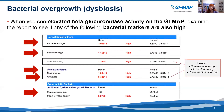When you see elevated beta-glucuronidase activity on the GI MAP test, examine the report to see if any of the following bacterial markers are also high: Bacteroides fragilis, Escherichia species, Clostridia class, Bacteroides phylum, Firmicutes phylum, Staphylococcus species, and Staphylococcus aureus. The GI MAP doesn't individually test Ruminococcus, Eubacterium, or Peptostreptococcus species; however, those genera are included within the Clostridia class and Firmicutes phylum, so if those are elevated, these genera could be contributing.